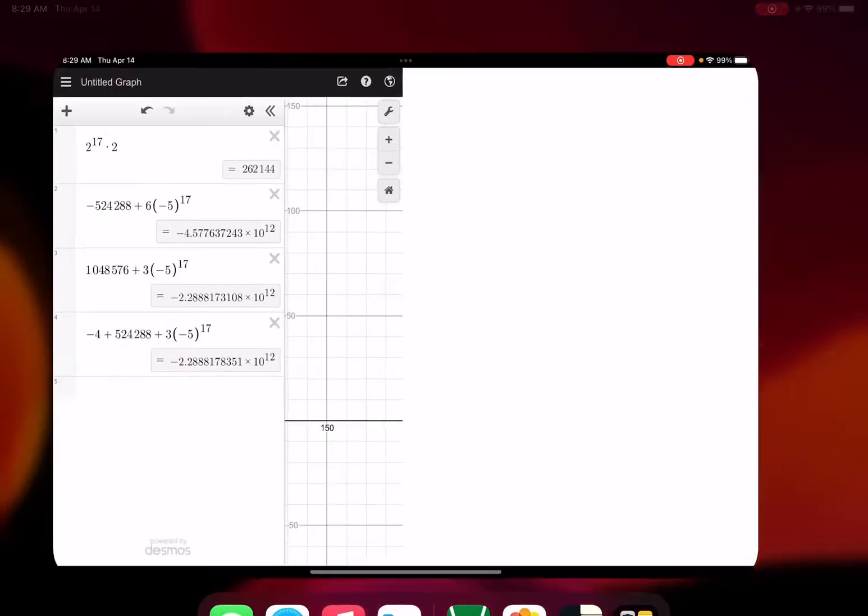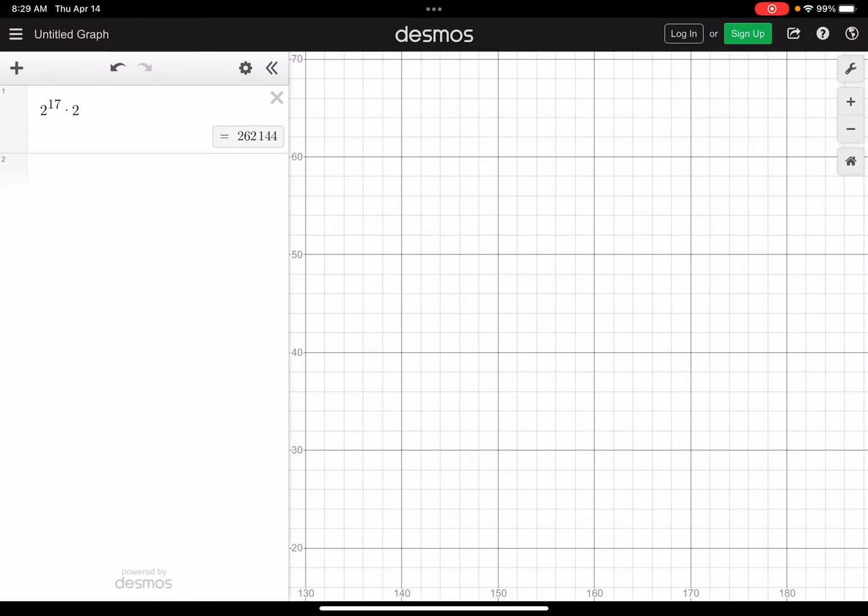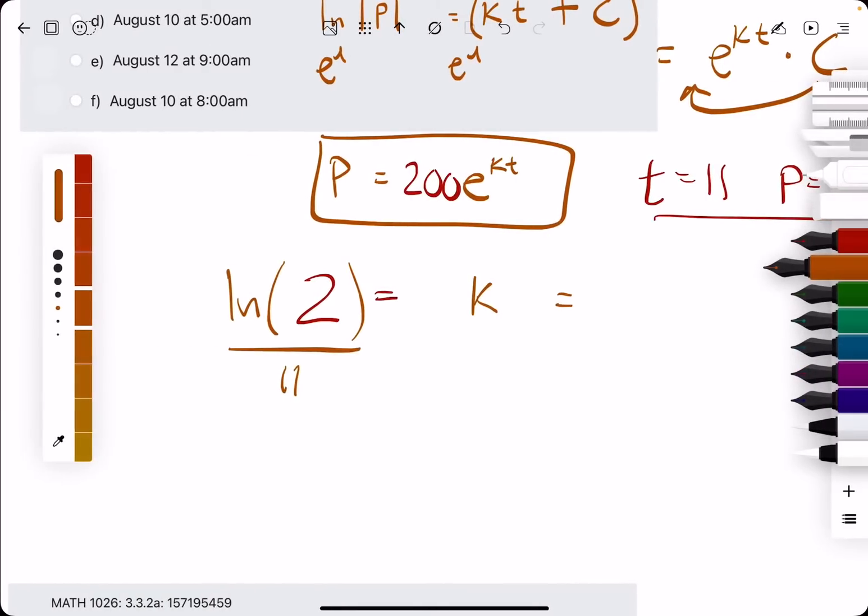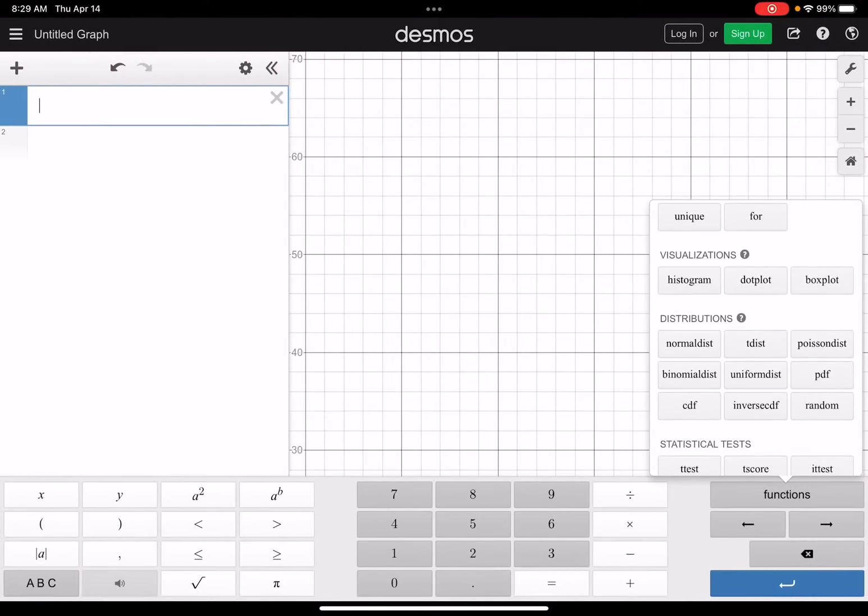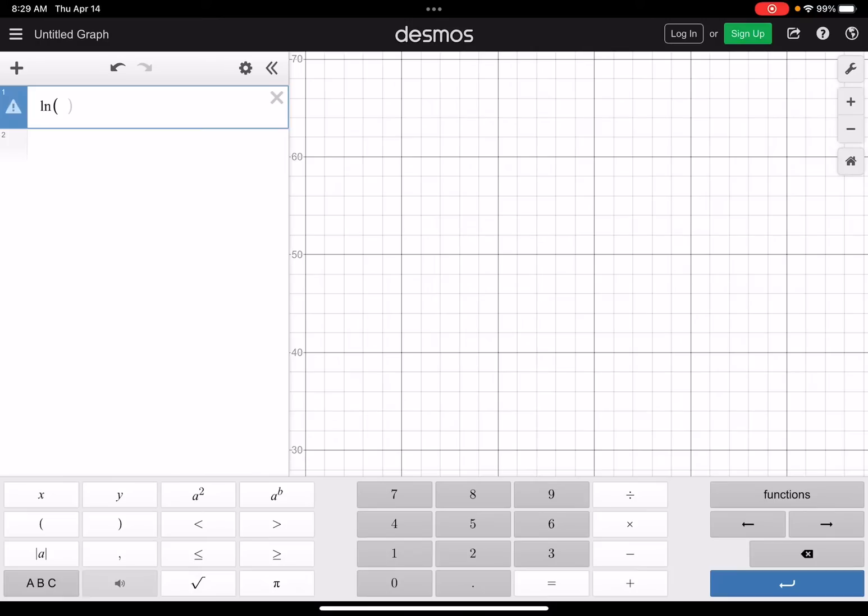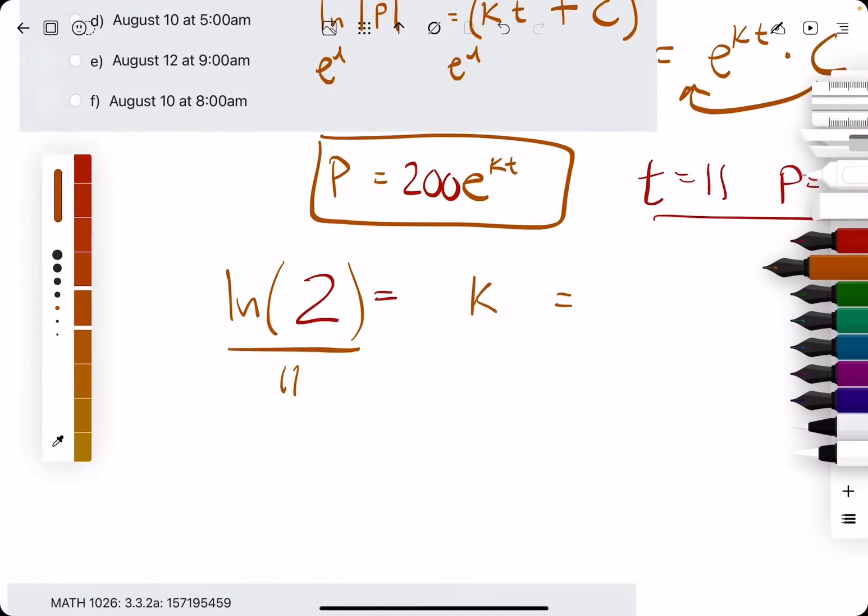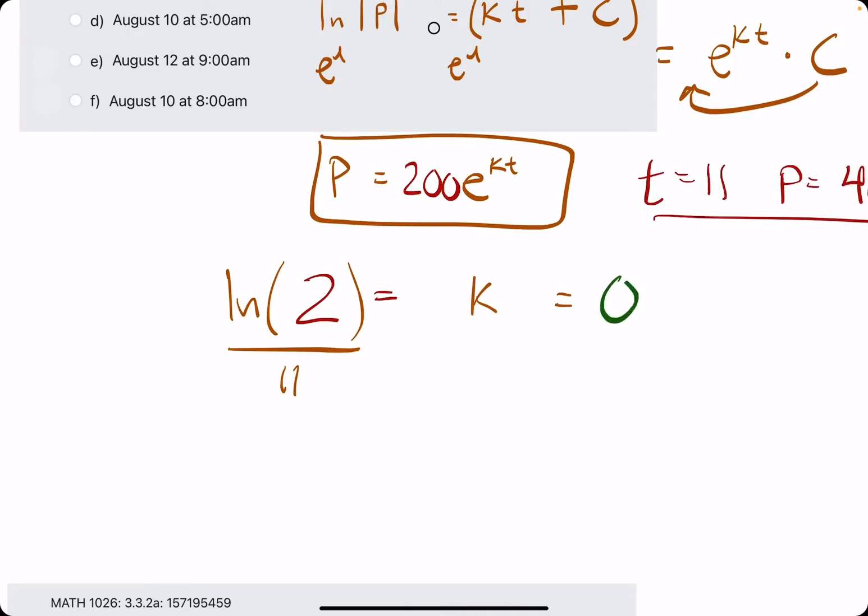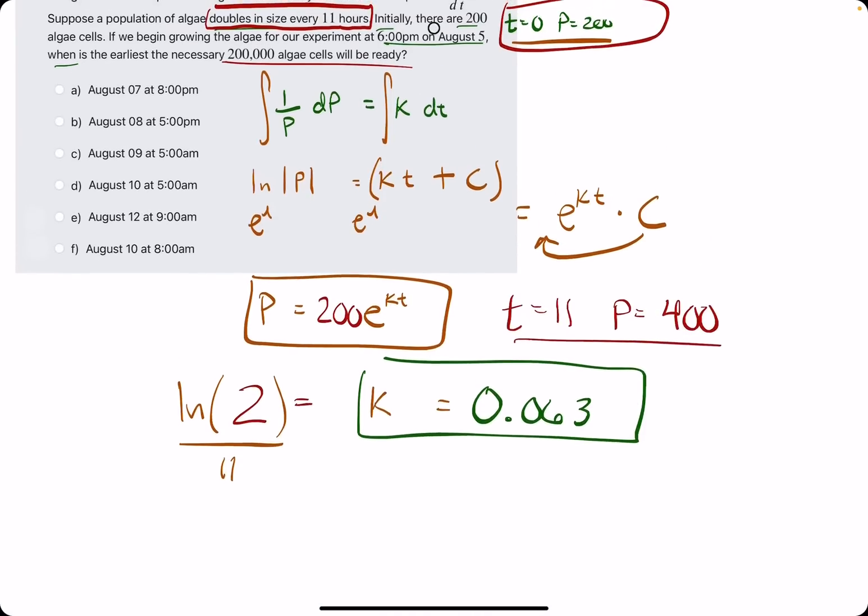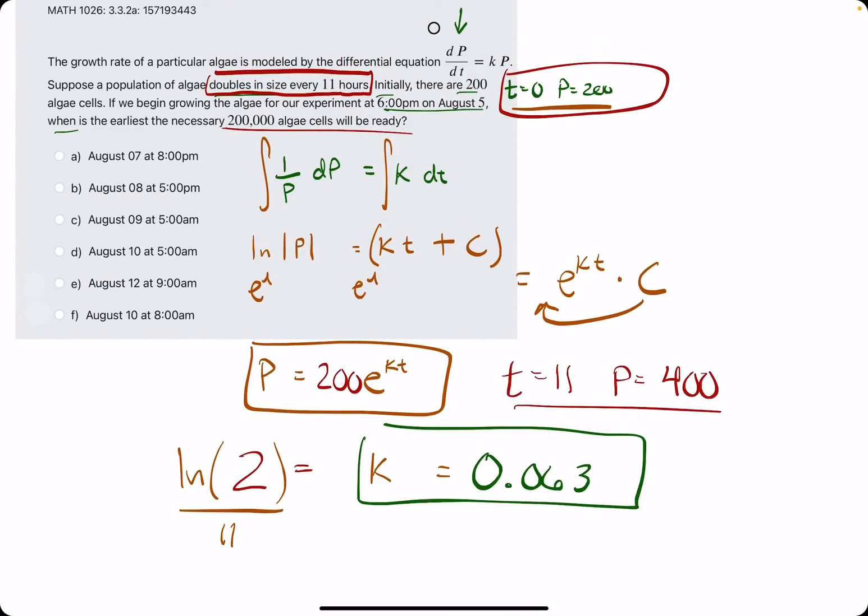to get K by itself. So what we do is open Desmos and solve that in here. So LN of 2 over 11. 0.063. So this is our K value. So we're doing great so far. We have our K value.